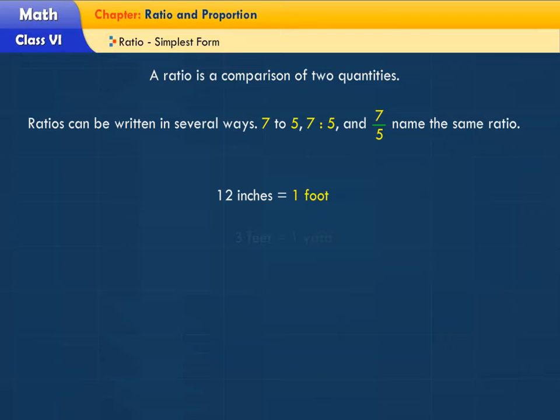12 inches is equal to 1 foot. 3 feet is equal to 1 yard. 36 inches is equal to 1 yard.